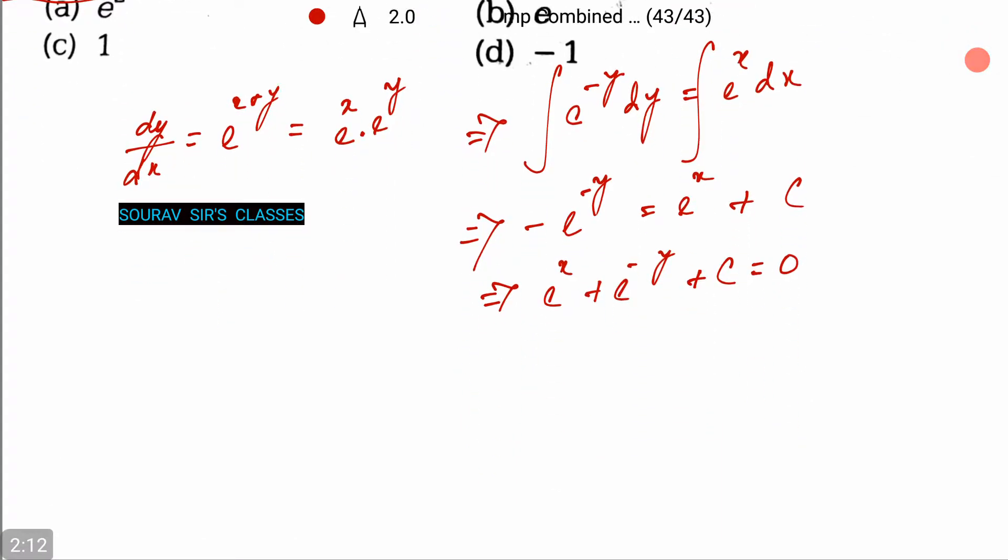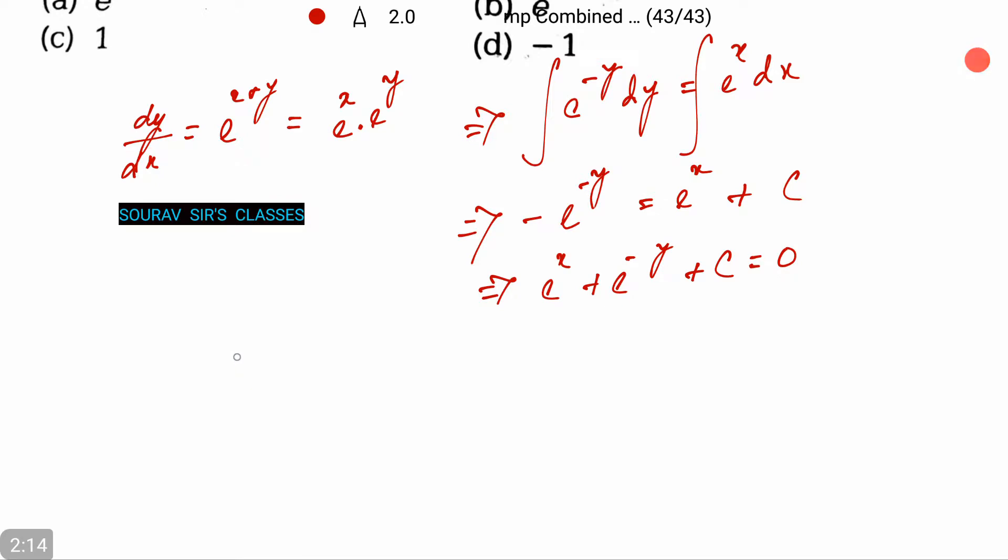Now, at x equals 1, y equals 1. So just substitute: e plus e to the power minus 1 plus c equals 0, which is e plus 1/e plus c equals 0. This implies c equals minus of e plus 1 by e.